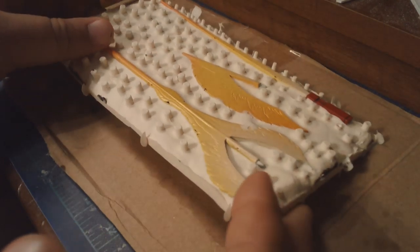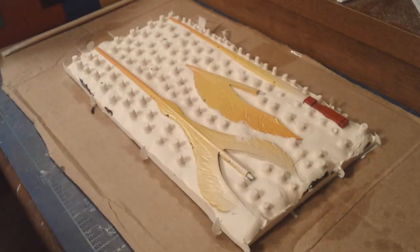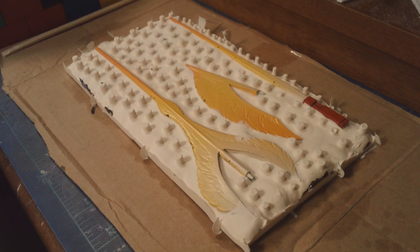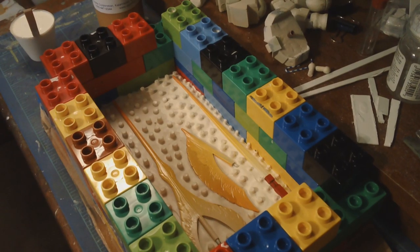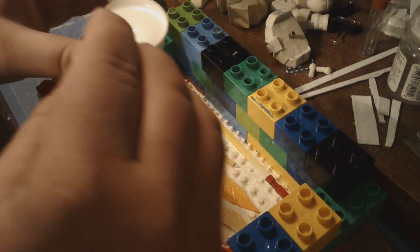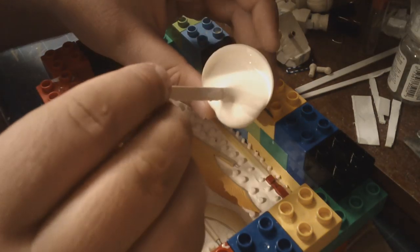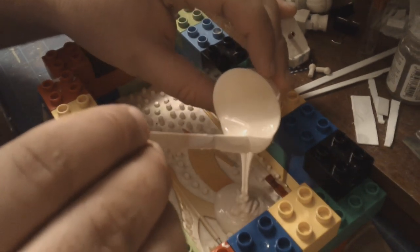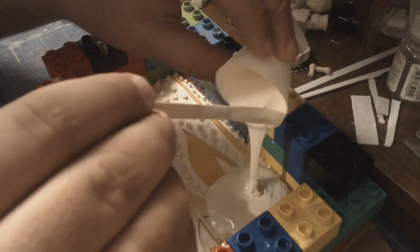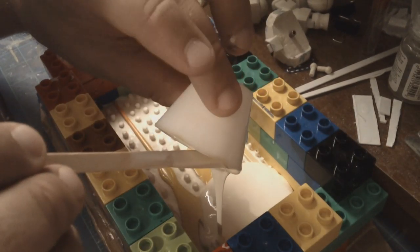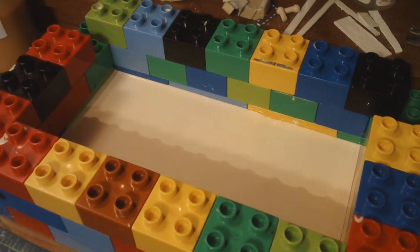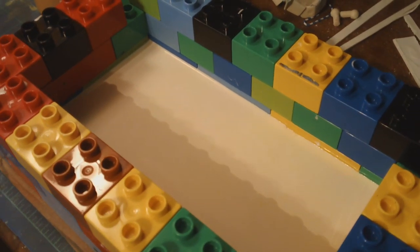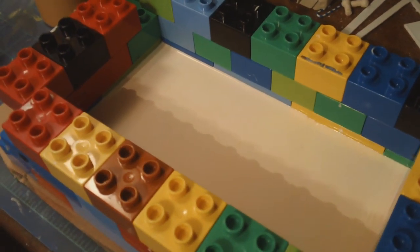So now we need to put the Legos back around the box and pour the second half of the mold. Alright, the second half of the mold is now poured and once again we wait and let it set overnight.